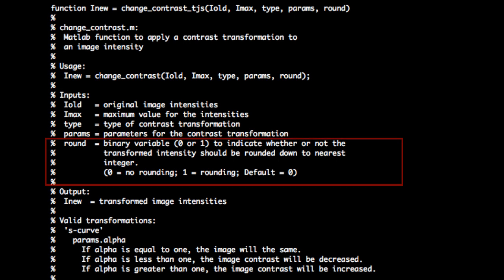The input variable round is used to determine if the output intensity should be rounded down to integer values.